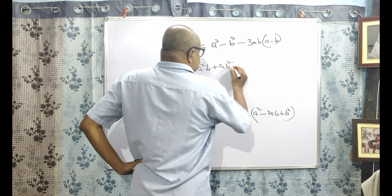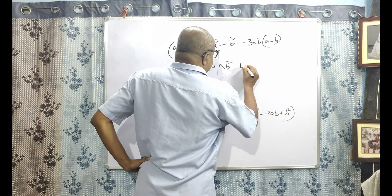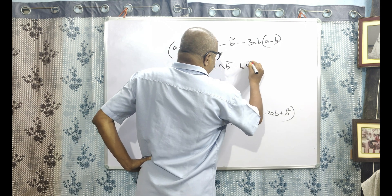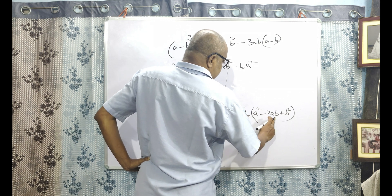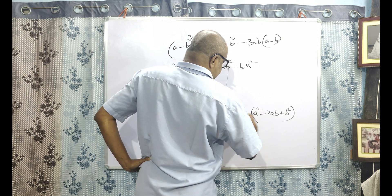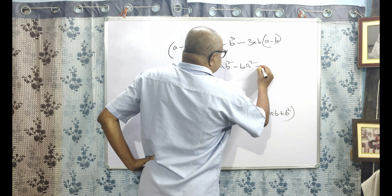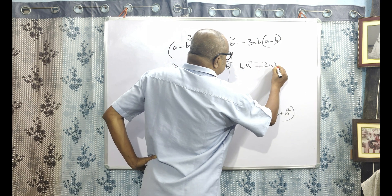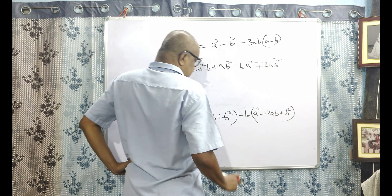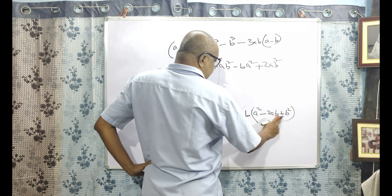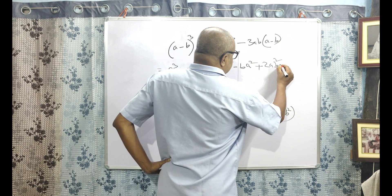Again, minus B into A square minus 2AB plus B square gives minus BA square, minus 2AB square, and minus B cube.